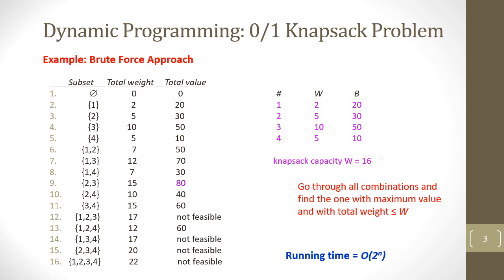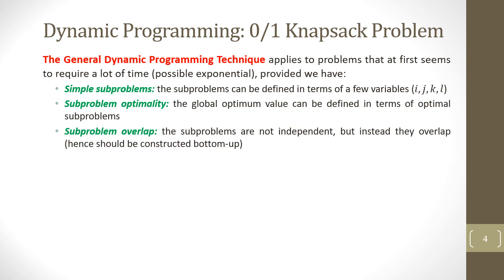The total complexity of this approach is 2 to the power of n, since we have to find all possible combinations of n items. The general dynamic programming technique applies to problems that at first seem to require exponential time, provided we have simple sub-problems. The sub-problems can be defined in terms of a few variables. Sub-problem optimality means the global optimum value can be defined in terms of optimal sub-problems. Sub-problem overlap means the sub-problems are not independent but overlap and hence should be constructed bottom-up.